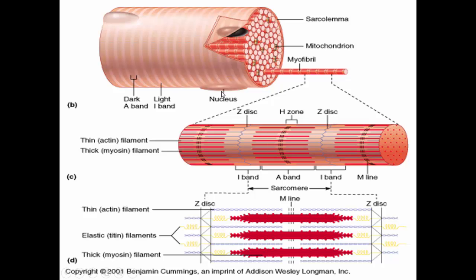These fibers overlap, and that's what gives the striped appearance to the muscle cell. Each muscle fiber is filled with many myofibrils, and each myofibril is packed with myosin and actin. Myosin are the thick filaments, and actin are the thin filaments. They overlap in such a way that we get the stripes — a dark stripe and a light stripe. These proteins interact and slide across each other, and each sarcomere will then shorten. As each sarcomere in a muscle cell shortens, the entire muscle cell shortens.